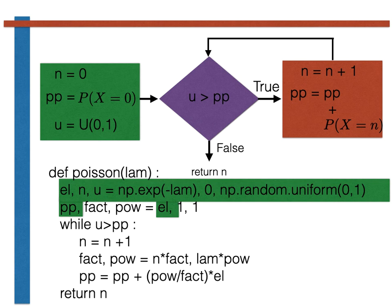Both of these variables are set equal to 1 initially. Within the loop, fact is then multiplied by n. As n increases by 1 on each pass through the loop, fact is thus equal to n factorial. The variable pow, by contrast, is multiplied by lam on each passage through the loop. The variable pow is thus equal to lambda to the power n. These two variables are useful as they ensure that we can evaluate the probability mass function for n using the code shown here.